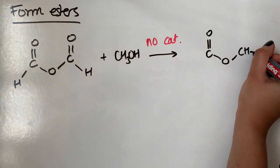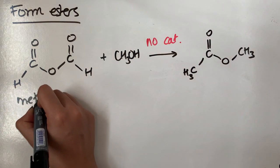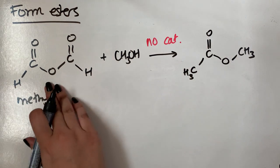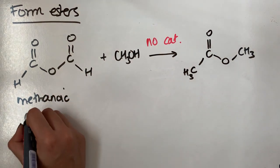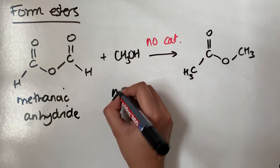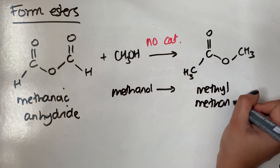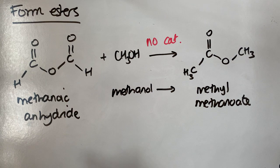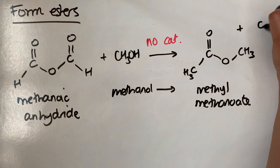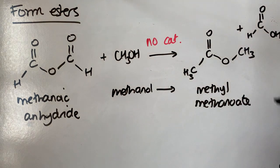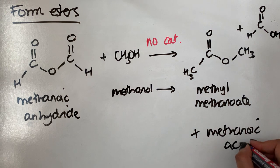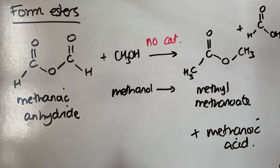In this example, methanoic anhydride reacted with methanol forms methyl methanoate. You can also see that we release a carboxylic acid molecule as well — in this case, methanoic acid. So plus methanoic acid. There's not a water molecule being released; it is a carboxylic acid molecule. This equation doesn't require a catalyst, the same way an acyl chloride doesn't require a catalyst — neither does an acid anhydride.